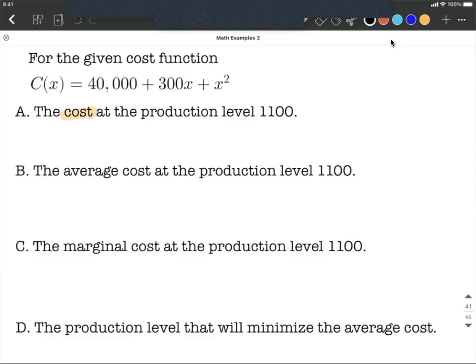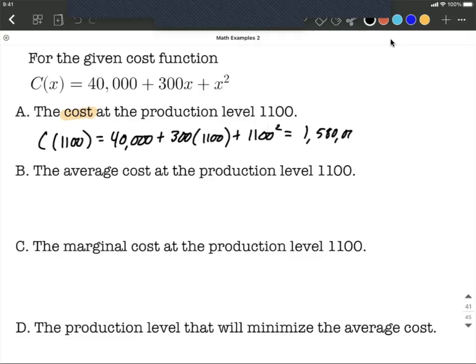So simply the cost in this case. We're going to use the cost function and plug in 1100. So replace each of the x's over on the right-hand side with 1100. Work that out and it's going to be 1,580,000 and that'll be in dollars because it's a cost.